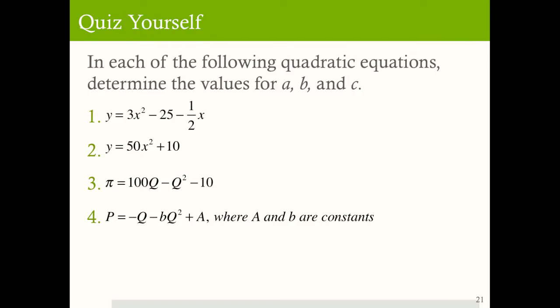Quiz yourself. In each of the following quadratic equations, determine the values for a, b, and c. Pause the video and try this yourself before moving on. So for the first one, we have y is equal to 3x squared minus 25 minus one-half x. The a value is the coefficient in front of x squared, so a is 3. b is the coefficient in front of just x, that's negative one-half. And c is the constant — c is a constant — so c here is negative 25.